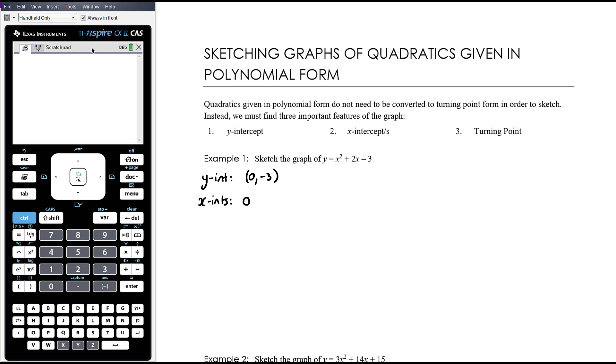So x-intercepts, we let y equal 0, x squared plus 2x minus 3. Now, if it's in this polynomial form, you won't be able to solve it by rearranging, so we're going to try and factorise and use the null factor law. Factors of negative 3 that add up to positive 2 is x plus 3, x minus 1, and so x equals negative 3 or 1. So we've got negative 3, 0 and 1, 0 for our x-intercepts.